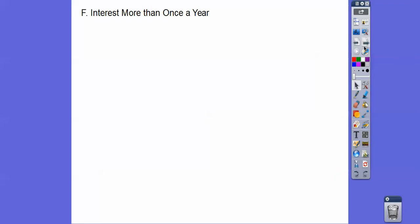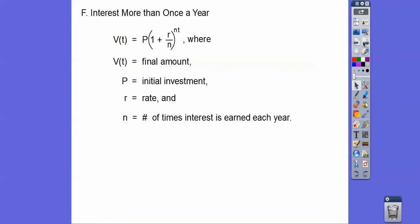here's another formula. Interest more than once a year is this formula right here. So it's the initial principle. This is my ending balance right there. And then r is of course your rate and n is the number of times of interest in each year. And then the t stands for how many times it's invested. So if it says semi-annually, that's twice a year. If it's quarterly, it's four times a year. If it's monthly, it's 12 times a year and daily is 365 times a year. So that would be the t right there.